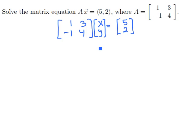Now, if we were to multiply this matrix product out, taking our rows dotted with their columns, we would end up with the first row times the first column of 1x plus 3y, and the second row times the first column of -1x plus 4y, and have that being the same thing as the vector (5, 2).